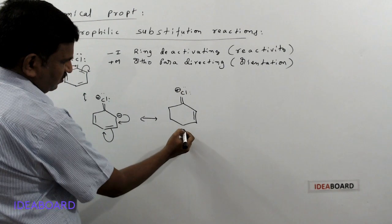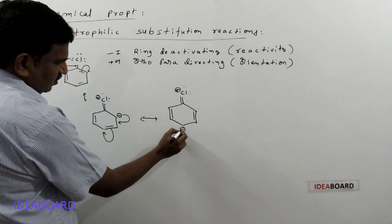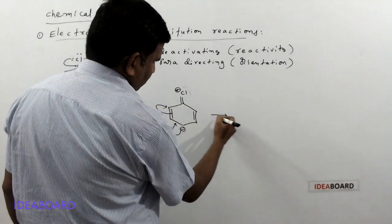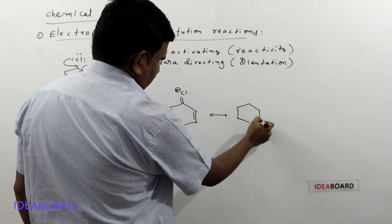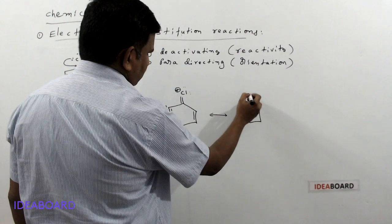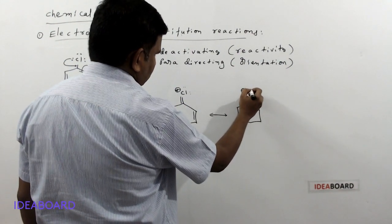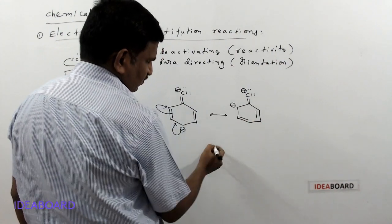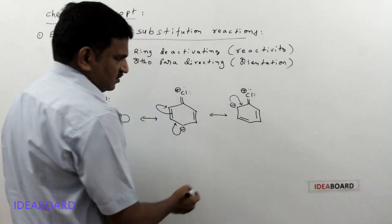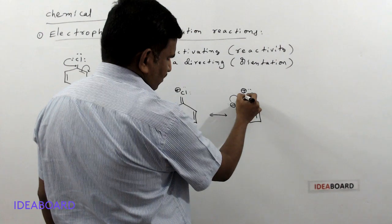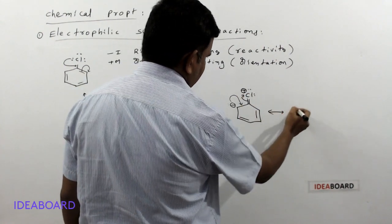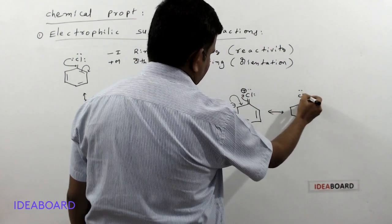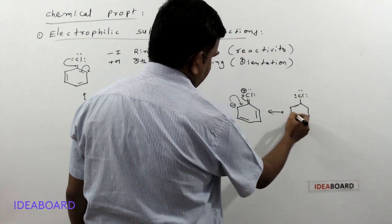We get another resonance structure with Cl⁺ having two lone pairs, a double bond, and negative charge developing at different positions. The lone pair and negative charge shift onto the adjacent carbon, and then the pi bond electrons shift, giving yet another resonance structure. Finally, we get back to the normal chlorobenzene structure where chlorine has three lone pairs and pi bonds throughout the ring.